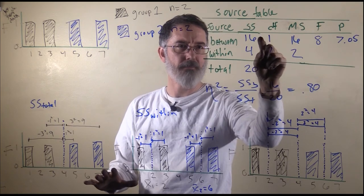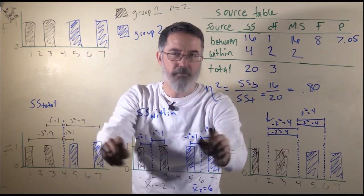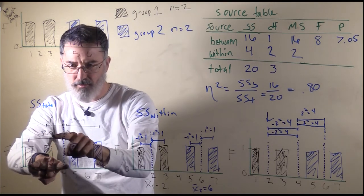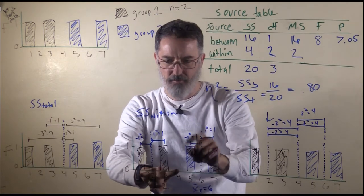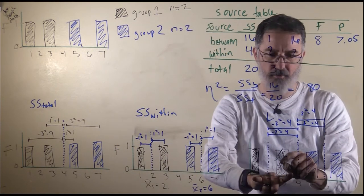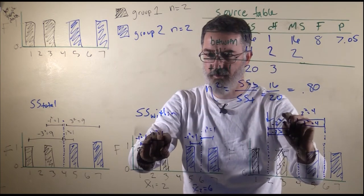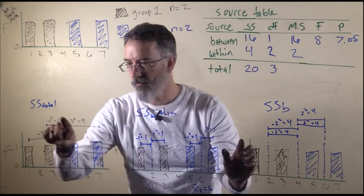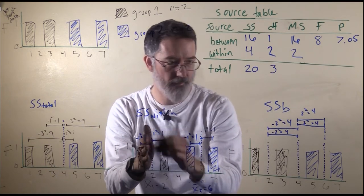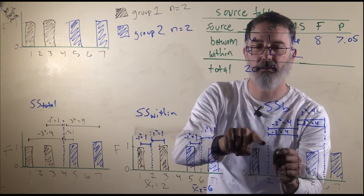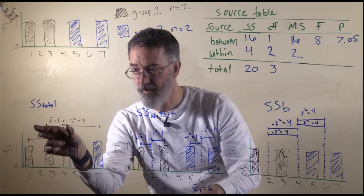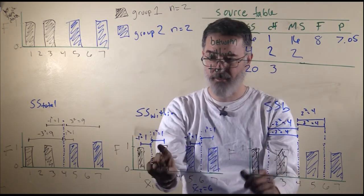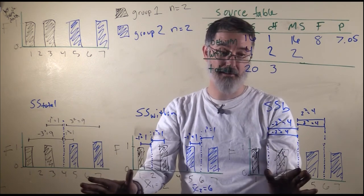The sums of squares total equals the sum of sums of squares between and sums of squares within. Looking at just group 1: its sums of squares total was 10 (9 plus 1); the sums of squares within for group 1 was 2, and the sums of squares between for group 1 was 8 — so 8 plus 2 gives us that 10. These sums of squares break the overall variance into the variance within the groups and the variance between the group means. There is a total amount of sums of squares, and this method breaks it into chunks that add up to that total.